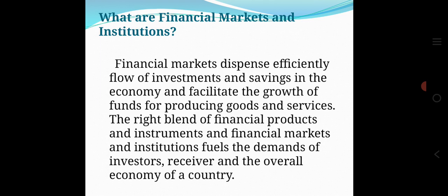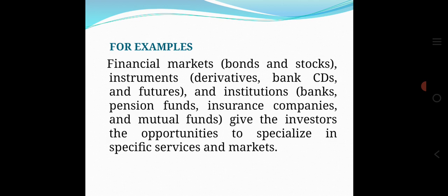What are financial markets and institutions? Financial markets dispense efficiently the flow of investment and savings in the economy and facilitate the growth of fund for producing goods and services. The right blend of financial products, instruments, financial markets and institutions fuels the demand of investors, receivers and the overall economy of a country. For example, financial markets like bonds and stocks, financial instruments like derivatives, bank CDs and futures, and financial institutions like banks, pension funds, insurance companies and mutual funds give investors opportunities to specialize in specific financial services and markets.